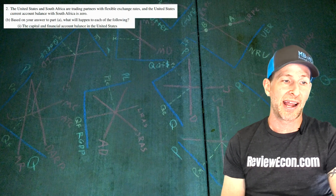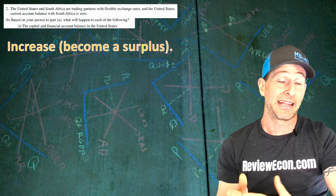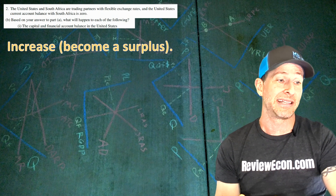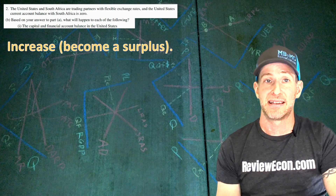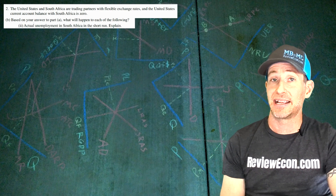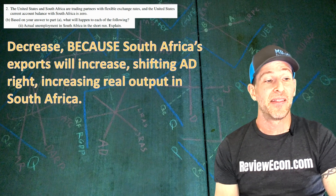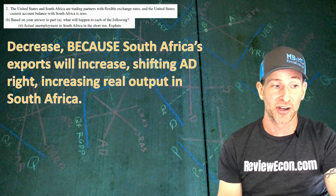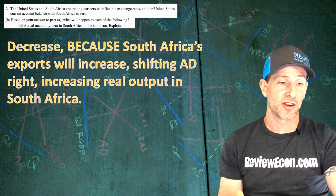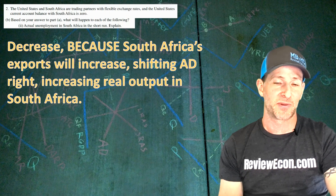Based on Part A, the capital and financial account in the United States will increase or become a surplus, because the current account decreased as a result of increased imports. For South Africa's actual unemployment rate in the short run, we'll see a decrease, because the increase in US imports will shift South Africa's aggregate demand curve to the right, increasing real output in South Africa.